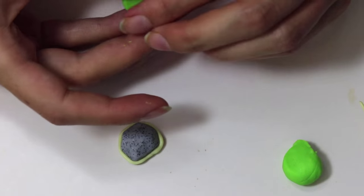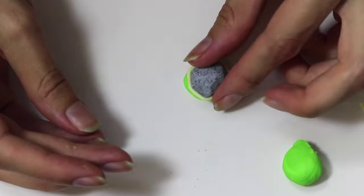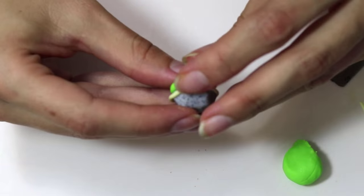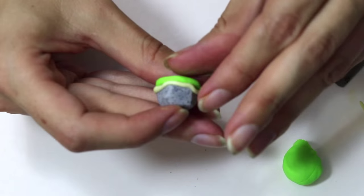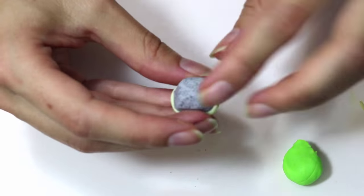And then from there we'll be putting this on a small little circle, flat circle, so that's going to be the body and the shell's on top now.